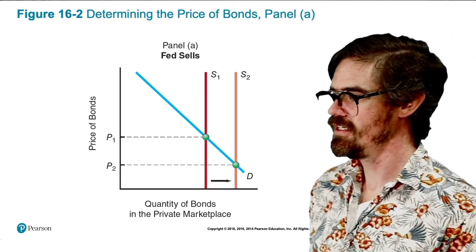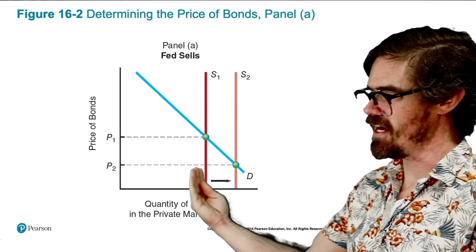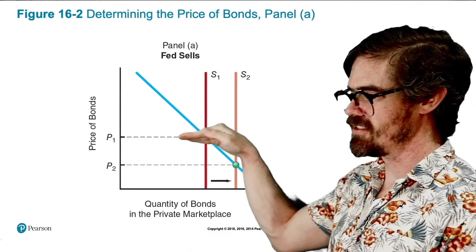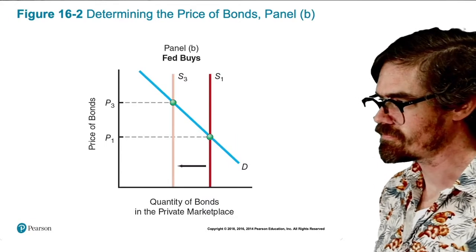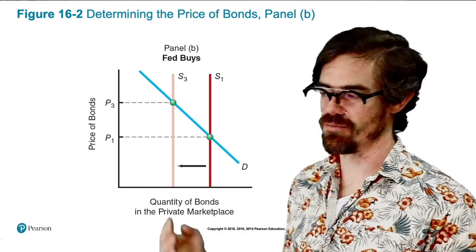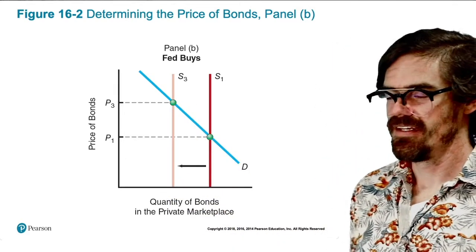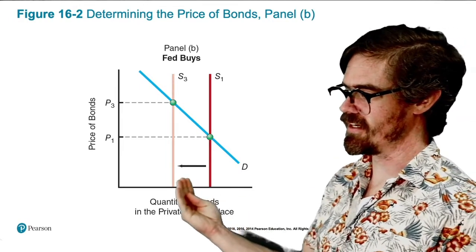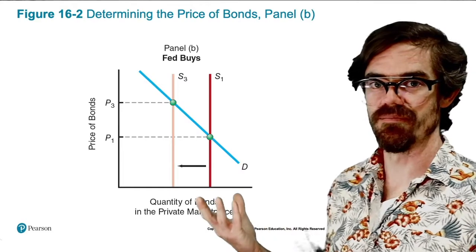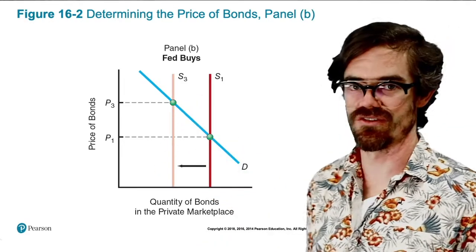For example, when the Fed sells bonds, it's basically increasing the supply of bonds. When it increases the supply of bonds by bringing them to the open market and providing more for sale, it increases the supply, which brings the price of bonds down. When it buys bonds, it's decreasing the supply of bonds for sale, which increases prices. Equivalently, when they buy, they're affecting demand — increasing the demand when they buy more bonds, which also increases the price. Either way, the ultimate result is the same: the price of bonds goes up when they buy bonds.